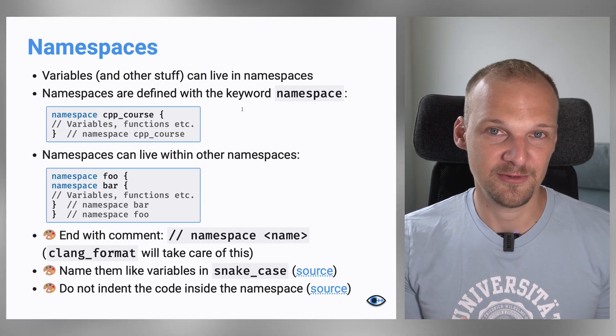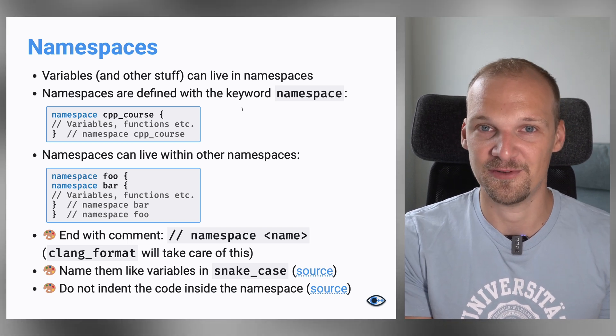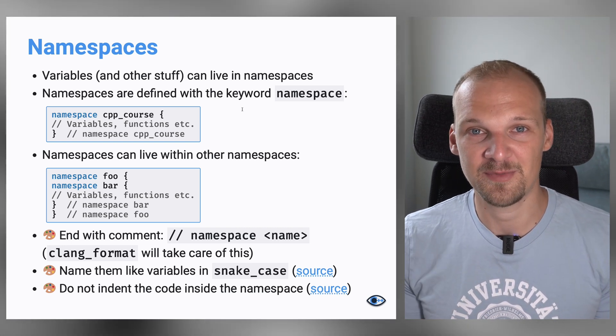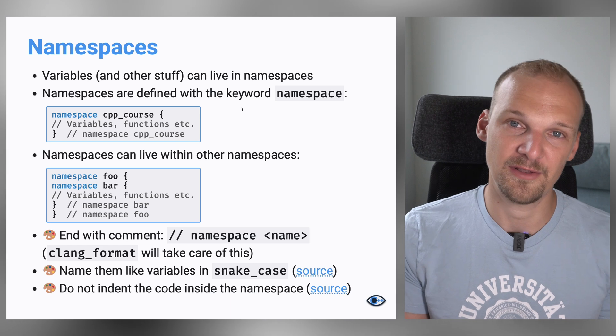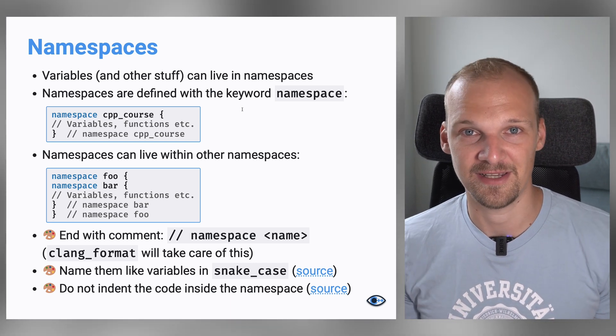Namespaces is basically just a space that has a certain name to it. Any variables can live in namespaces — technically other stuff can too, but for now we'll just focus on variables. To create a namespace, you use the keyword namespace. The compiler will understand that you want to create a namespace. Then you provide the name, open the curly brackets, put the contents inside, and close the curly brackets.